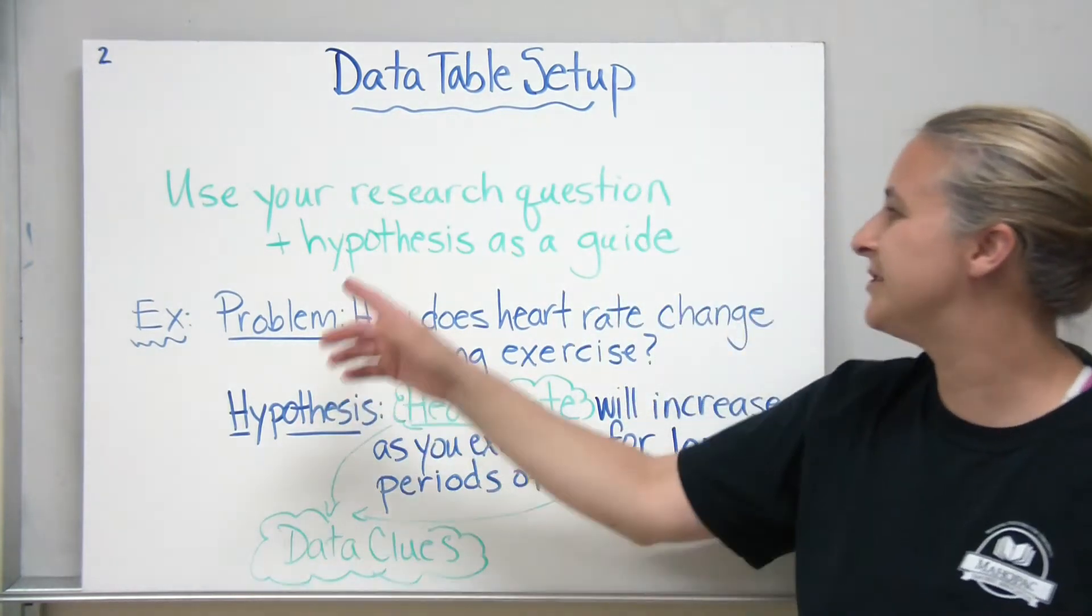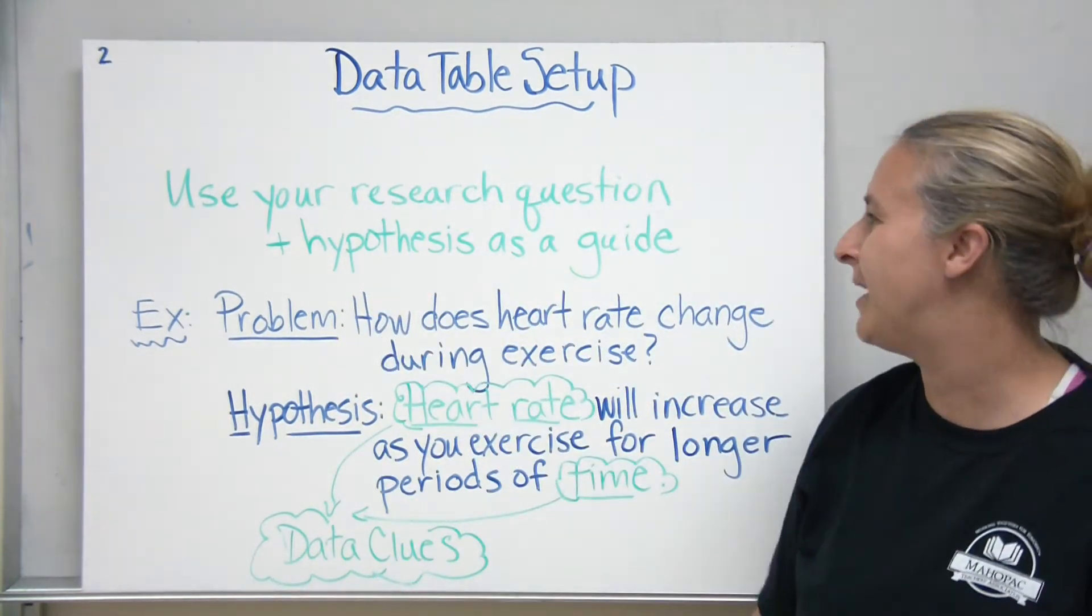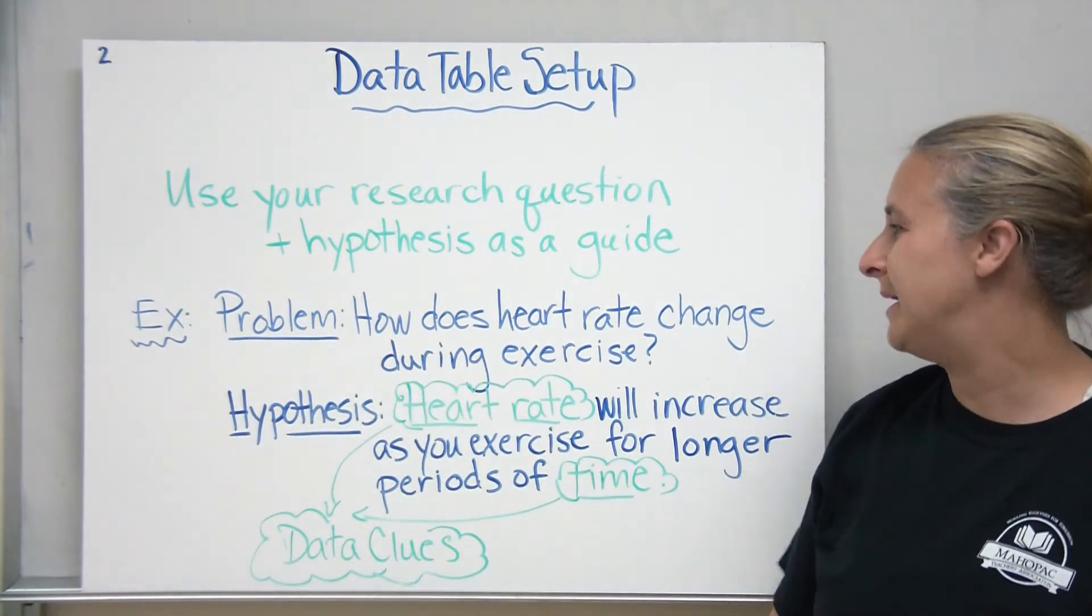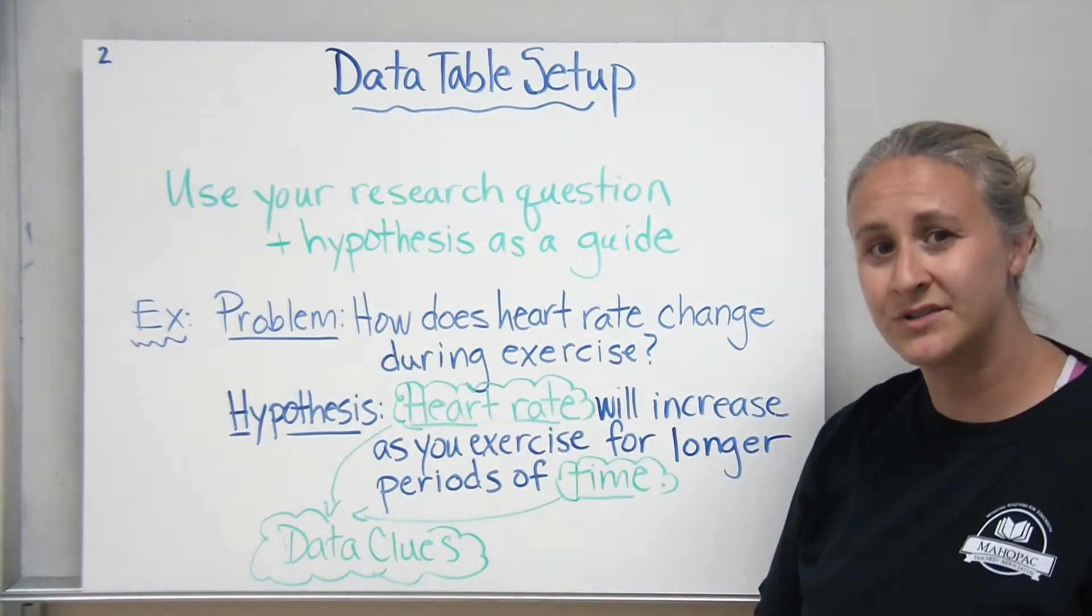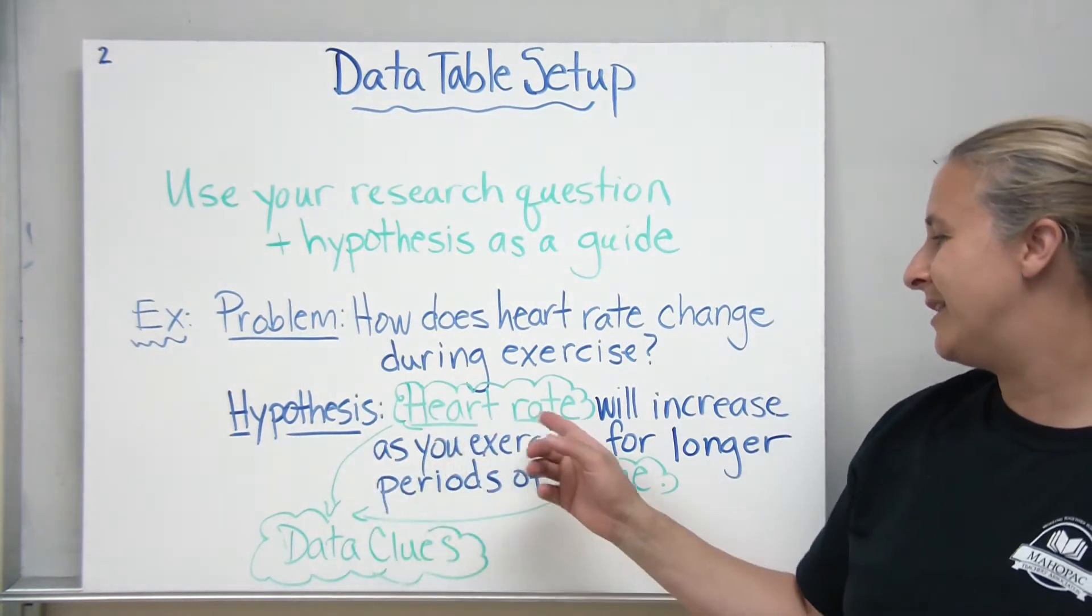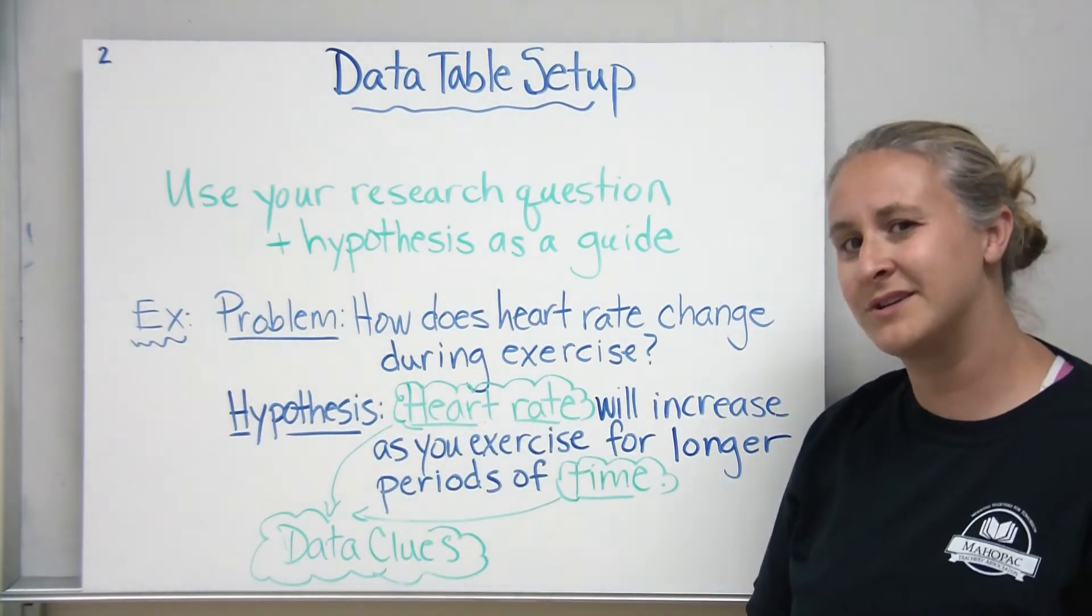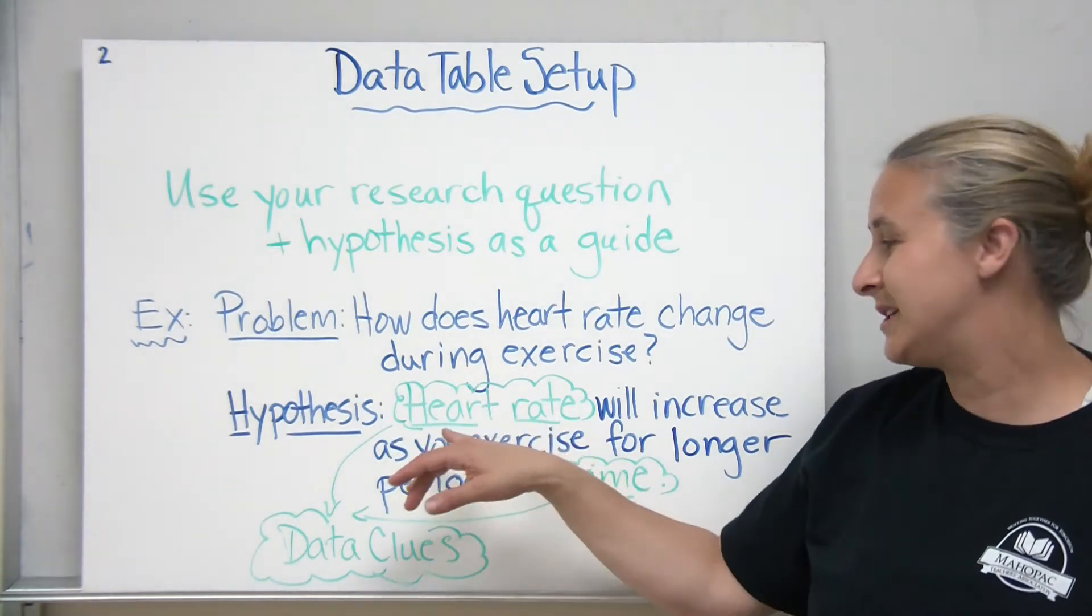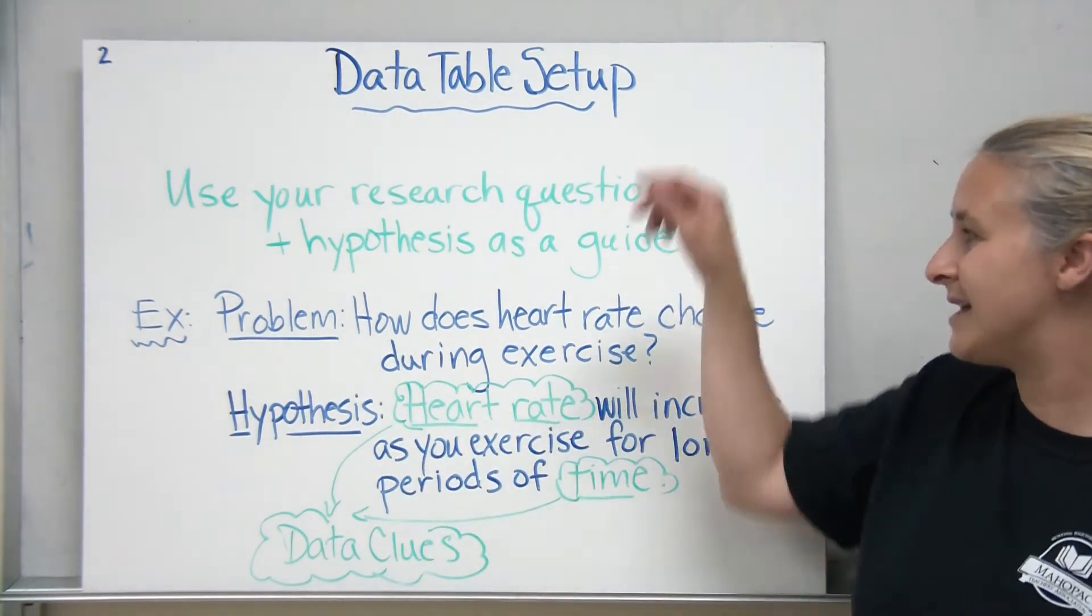The first thing you should do is use your research question and your hypothesis as a guide. For an example, our problem could be how does heart rate change during exercise? Our hypothesis could be that heart rate will increase as you exercise for longer periods of time. Our data clues here are heart rate and time.